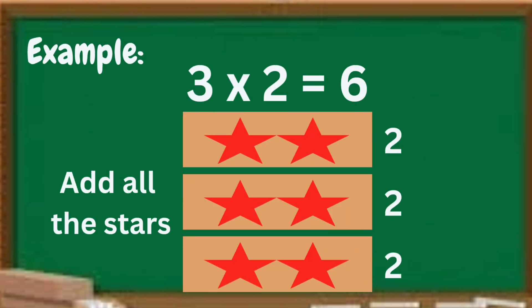Let us have an example. We have here 3 times 2 equals 6. The multiplicand is 3, the multiplier is 2, and the answer is 6. In this example, we have 3 rectangles, and in every rectangle there are 2 stars. We have to add all the stars so we can know if the product is really 6. 2 plus 2 is 4, and 4 plus 2 is 6. Therefore, 3 times 2 equals 6 is correct.